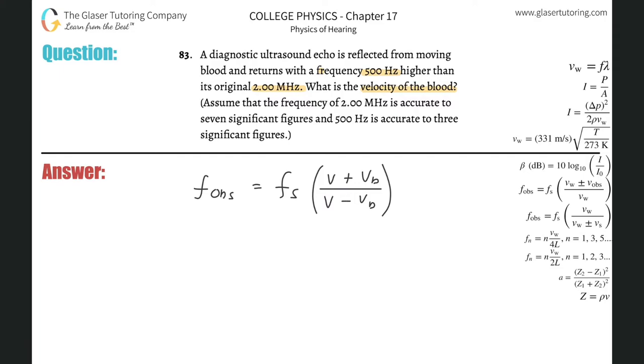Now we solve this. The frequency the machine experiences is 2 times 10^6 hertz plus 500 hertz. The source produces 2 times 10^6 hertz multiplied by the velocity of sound in the body, 1540 meters per second, over 1540 minus v_b. We have an equation with only v_b to solve for.